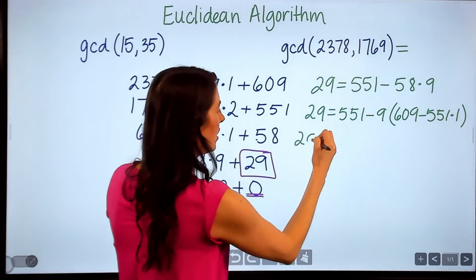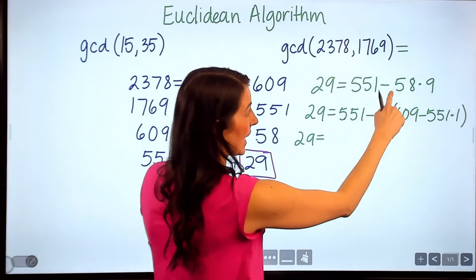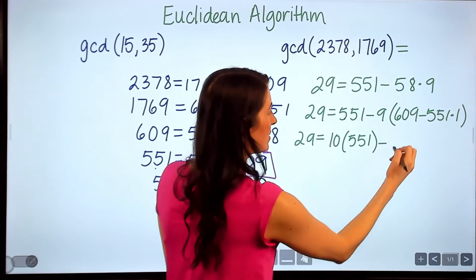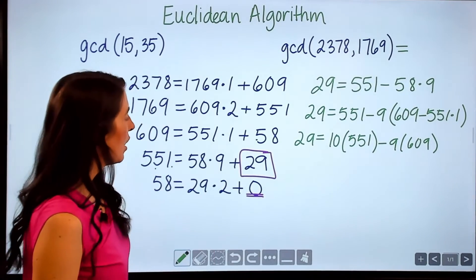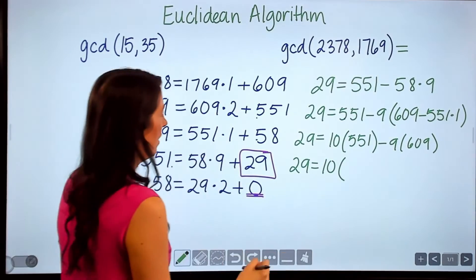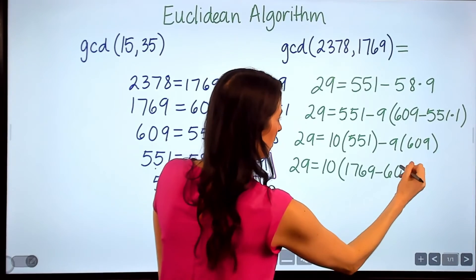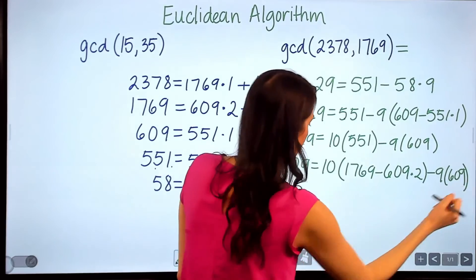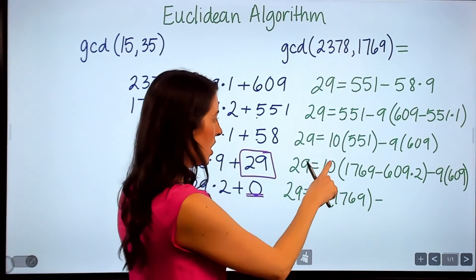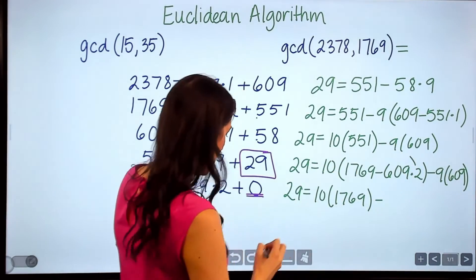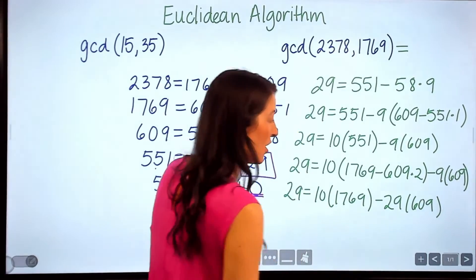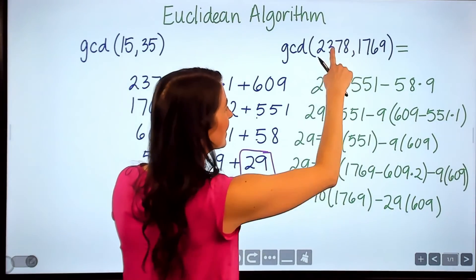Now combining these together: I get 551 minus 9 times negative 1, which is plus 9, plus 1, giving 10 times 551 minus 9 times 609. From here I'll replace 551 with 1769 minus 609 times 2. Combining these together I have 10 times 1769, and for 609 I get negative 20 minus 9, which is negative 29 times 609. I can see the 1769 appearing, but I still need the other original number to show up.